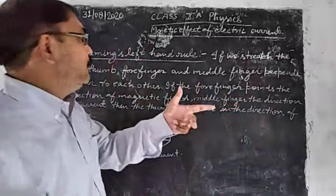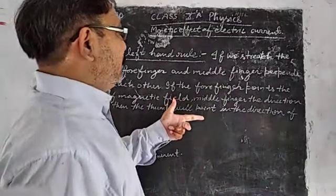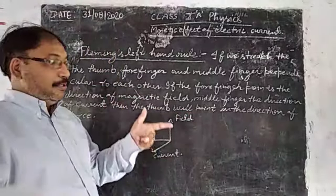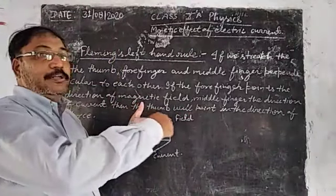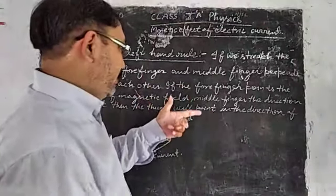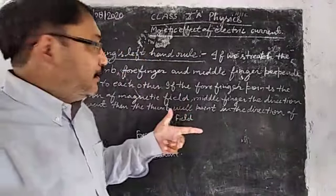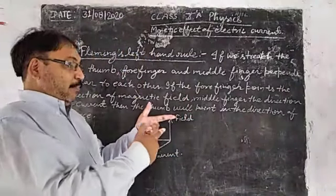If the forefinger points the direction of the magnetic field and the middle finger is the direction of the current, okay, middle finger is the direction of the current, forefinger is the direction of the magnetic field.